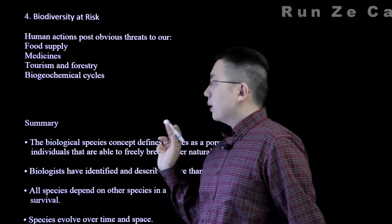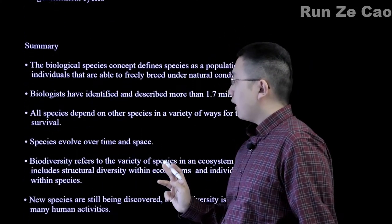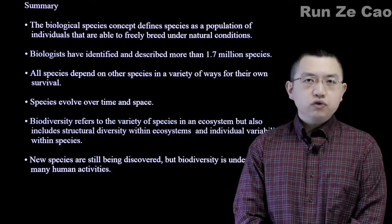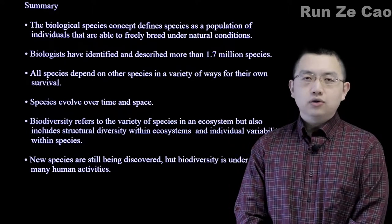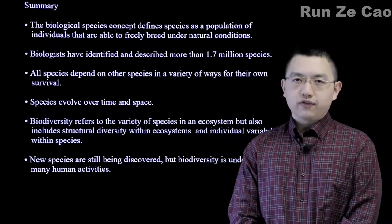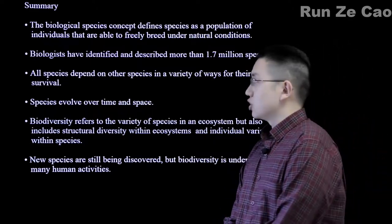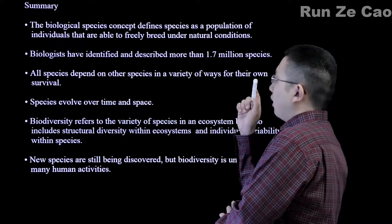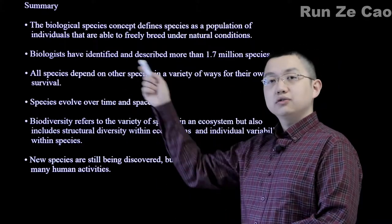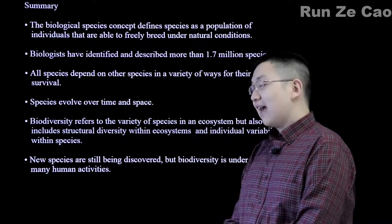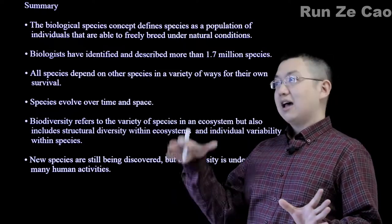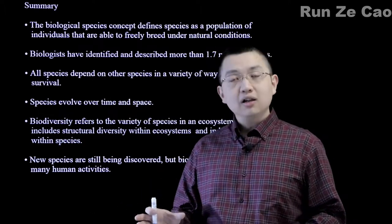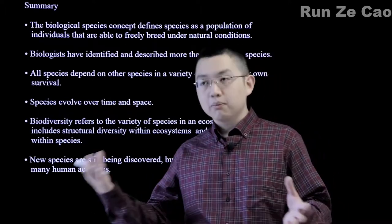In summary, the biological species concept defines species as all individuals able to freely breed under natural circumstances and which do not suffer hybrid breakdown within a few generations, as certain species of rice do. A population is a group of individuals that does this. In some cases a species has only one population; in others it can have many populations experiencing relatively rare gene flow, such as humans before modern travel technologies.